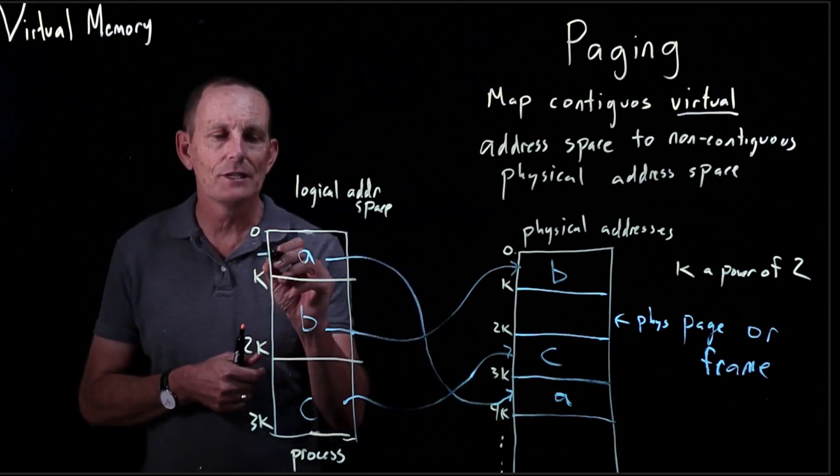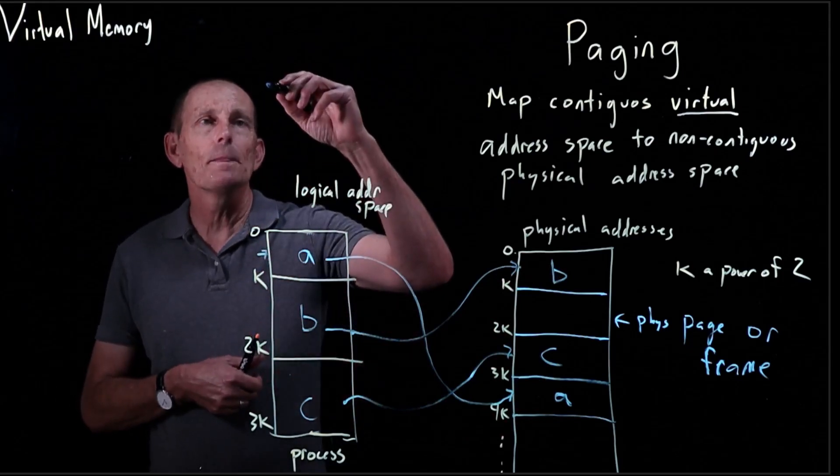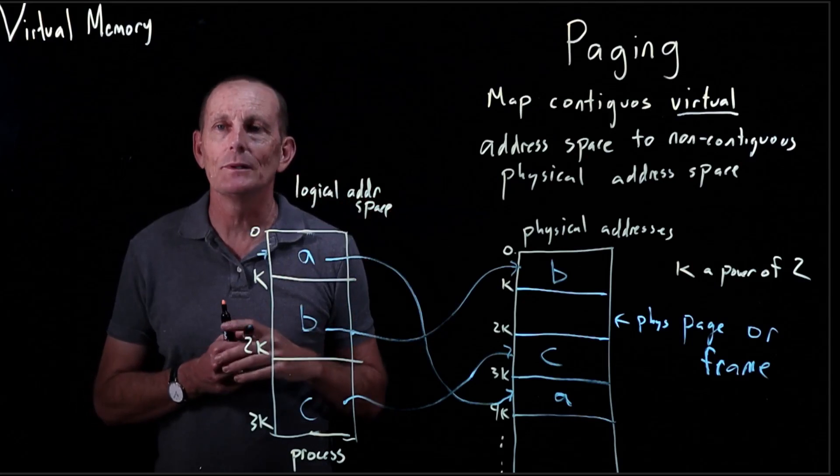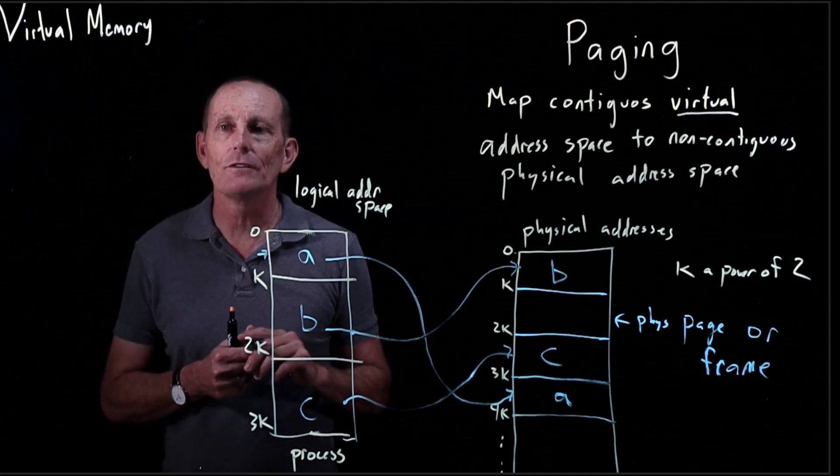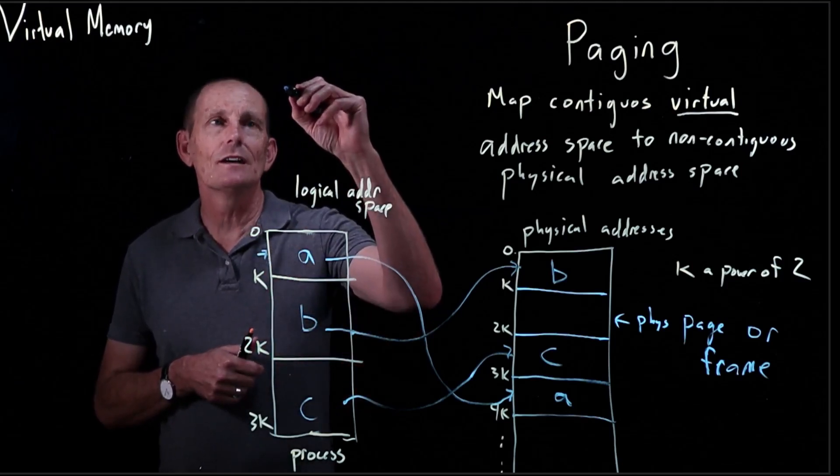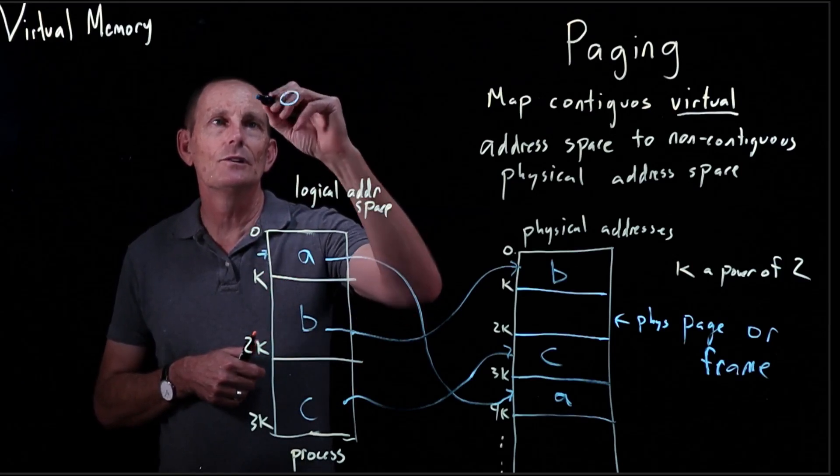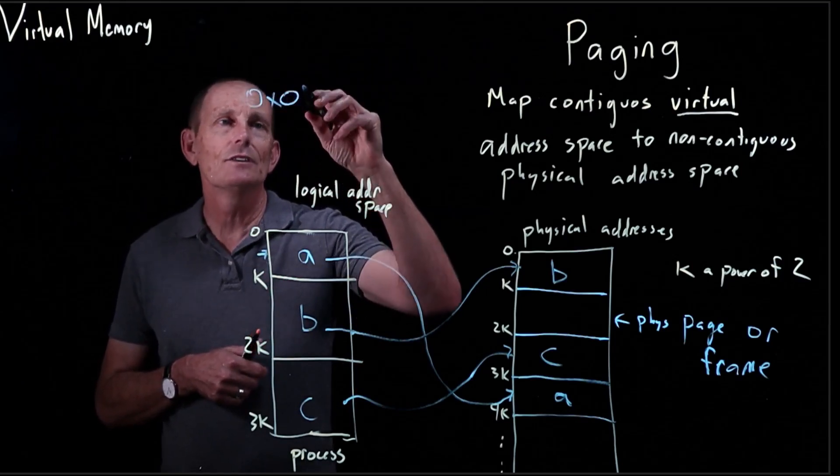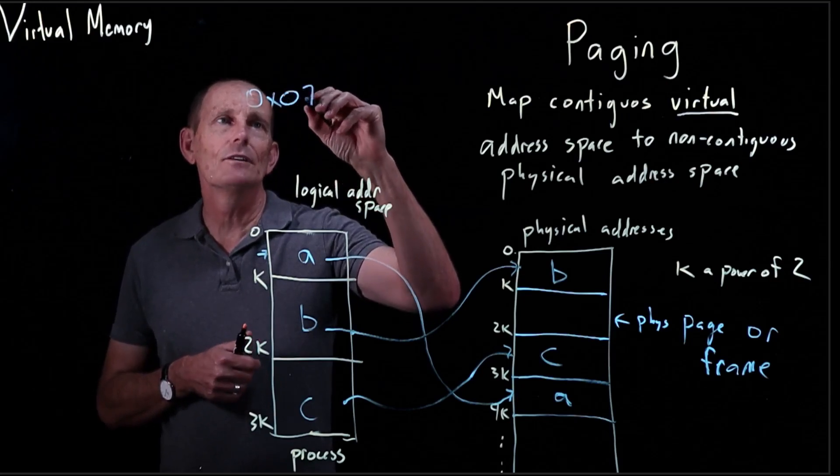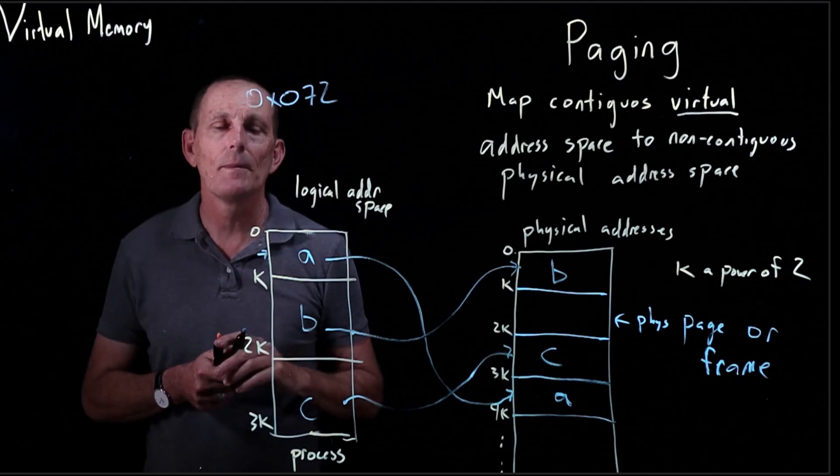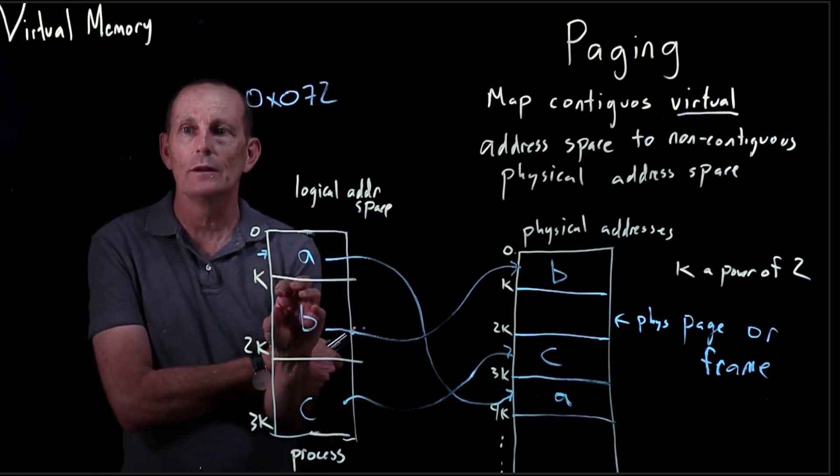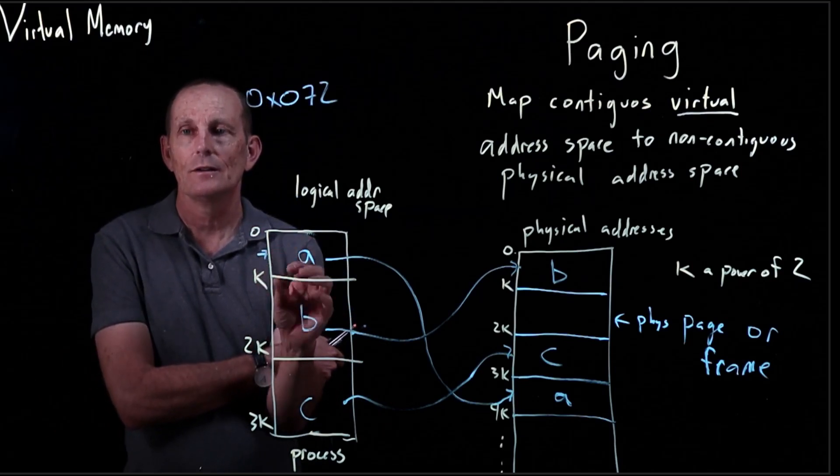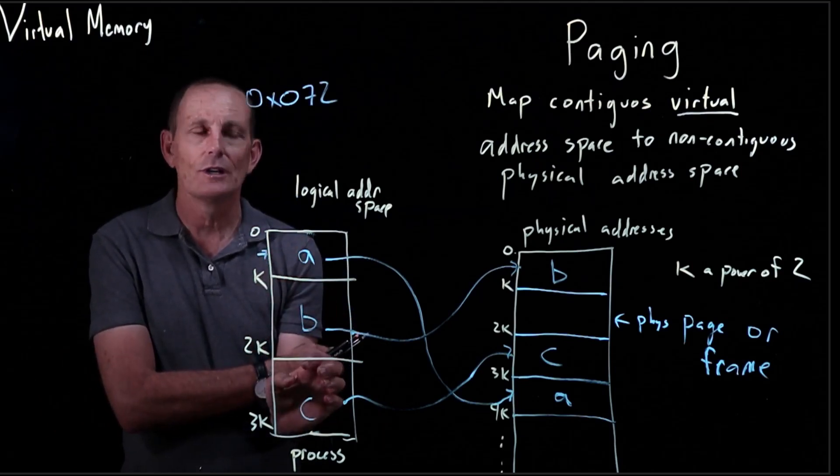let's say k, just to make it simple, is 256. So we've got pages of size 256. And we have here the address 0x072, this is in hexadecimal. So that's within the first page. And the numbers in here would start with 0x1, then another 8 bits, and 0x2, and another 8 bits.